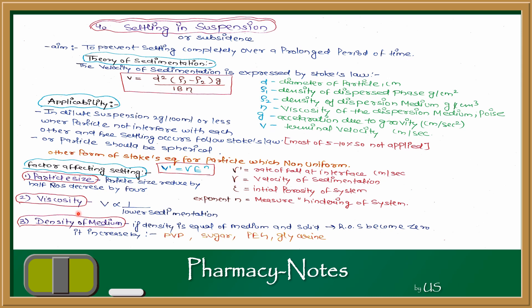Regarding viscosity: the rate of sedimentation is inversely proportional to viscosity. If viscosity is less, the rate of sedimentation will be higher, because the particles will settle lower and form a hard cake. Third is density of medium: if the density of the dispersed phase equals the density of the dispersion medium, the rate of sedimentation will be zero because gravitational force will not act on the dispersed phase. We cannot make it exactly zero but can minimize it by increasing the density of the dispersion medium using agents such as PVP (polyvinylpyrrolidone), sugar, polyethylene glycol, or glycerin.